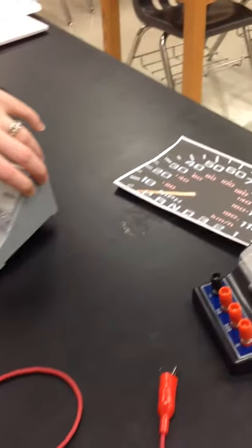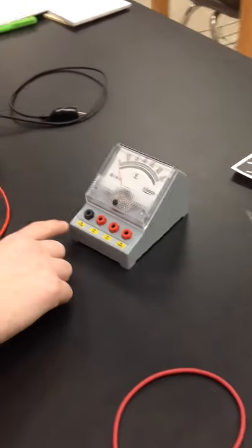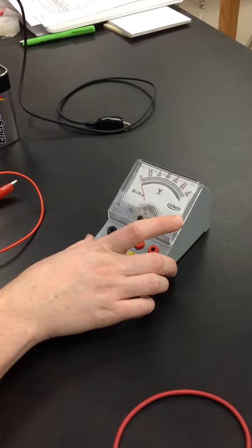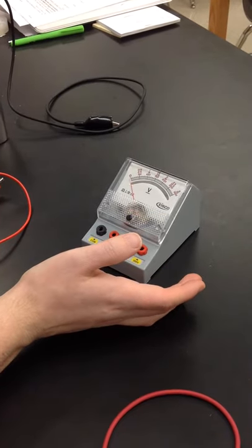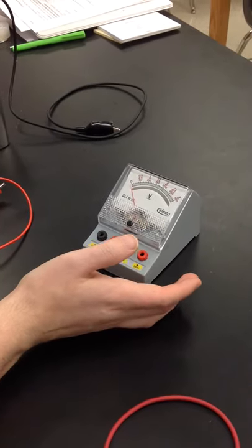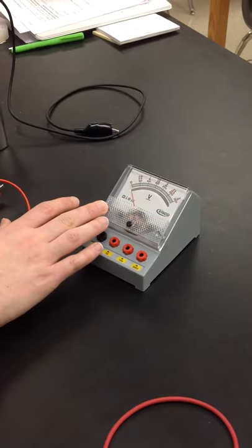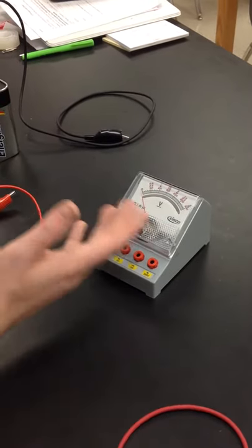To start, we're going to use the voltmeter. The voltmeter is a good way for us to test and see how much charge is left in our batteries. And it's also a good way to measure the potential difference in a circuit, which is the definition of voltage.